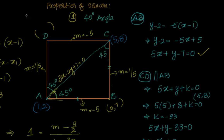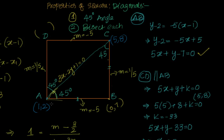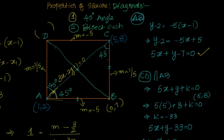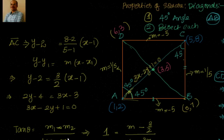Once we have B = (0,7), we use the second property: the diagonals bisect each other. The midpoint of AC with A=(1,2) and C=(5,8) is (3,5). Since the diagonals bisect each other, and one diagonal endpoint is B=(0,7), we can find D. Using the midpoint formula, D = (6,3). Please verify that you get (0,7) and (6,3) as the remaining two coordinates.